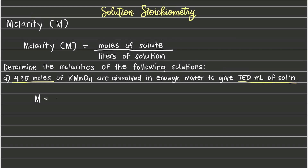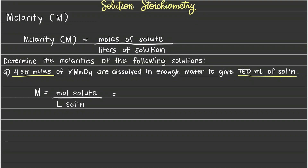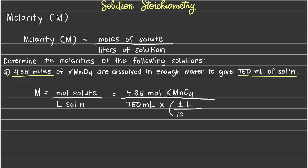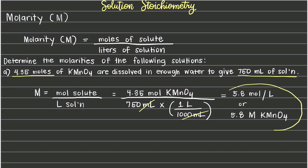We write down our formula for molarity and substitute the given into our equation: 4.35 moles as our moles of solute, and 750 mL as the volume of our solution. Since 750 mL is not yet in liters, we need to convert it first into our desired unit. The concentration of this solution is 5.8 mol/L, or 5.8 molar potassium permanganate.